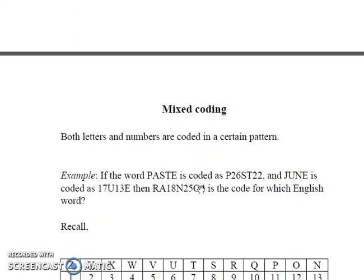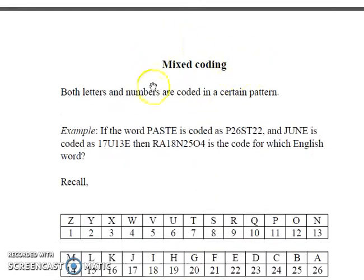Coming to the last part of this video, we have mixed coding where both letters and numbers are simultaneously encoded. For example, the word PASTE is encoded as P26ST22, and JUNE as 17U13E. We need to find the word whose code is RA18N2504.